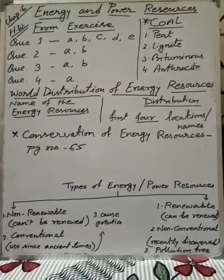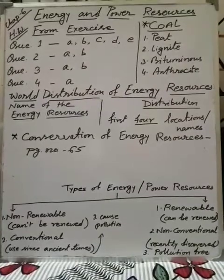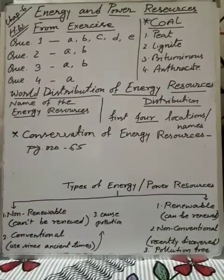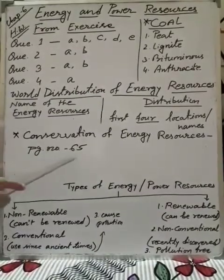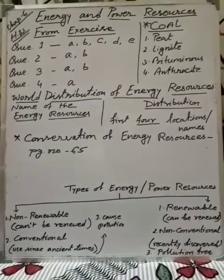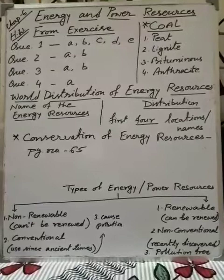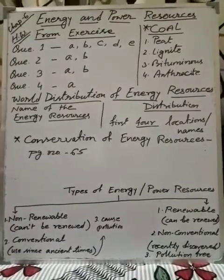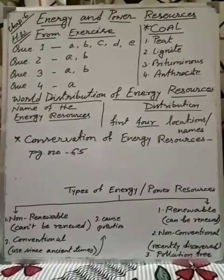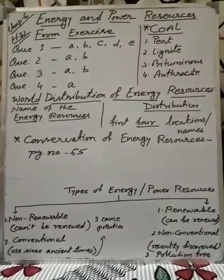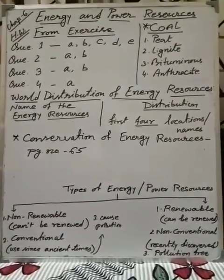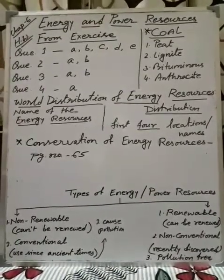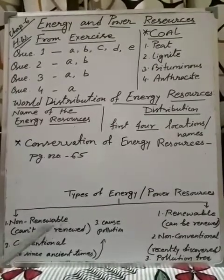So these are the four types of coal. Their distribution — I have already given the homework — you will find out where in the world coal is basically found or extracted. The last part of the chapter is conservation of energy resources. Conservation means to conserve or protect the energy resources from being depleted. Energy resources are the basic requirement for the economic development of a country, so we should conserve them from depletion, especially non-renewable ones.